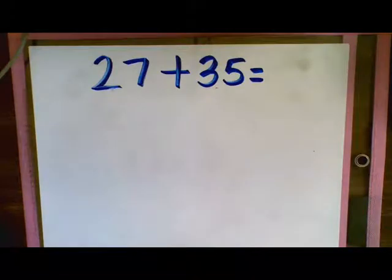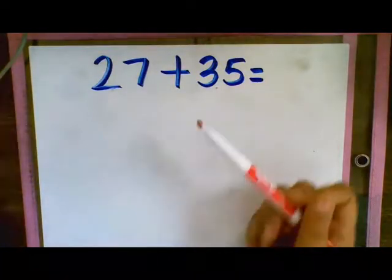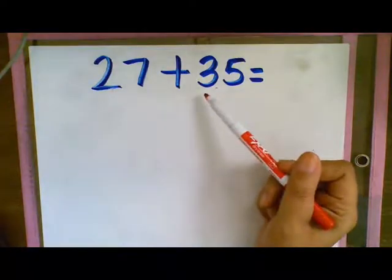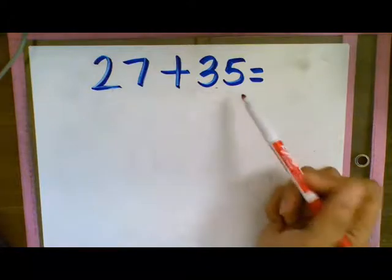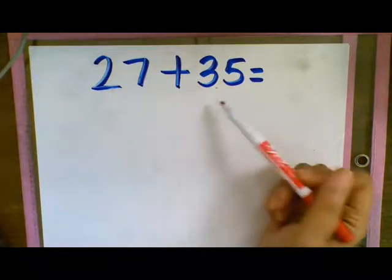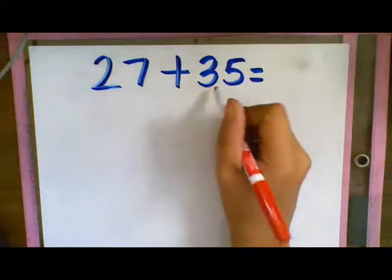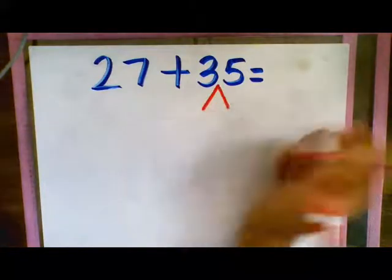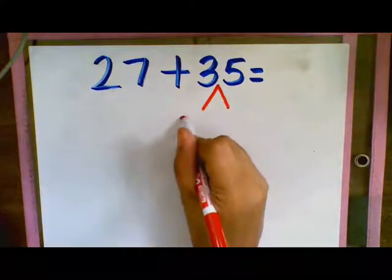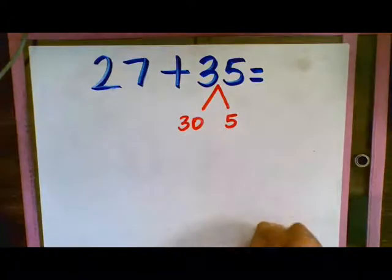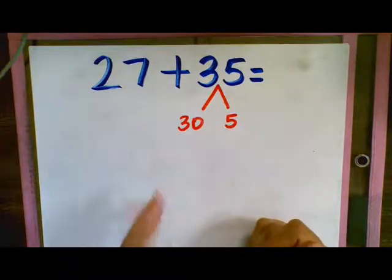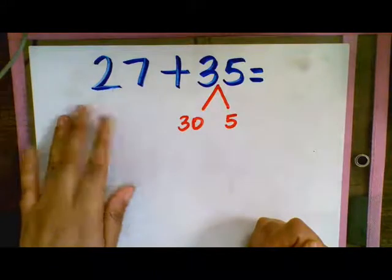We're going to break apart 35 and to break that apart we know from the place value we've been talking about in previous videos that the number 35 is comprised of three tens and five ones or 30 plus 5. So we're going to do that and break it apart. So 35 is 30 and 5. We're only focusing on breaking apart our add-in not the first number just our add-in.